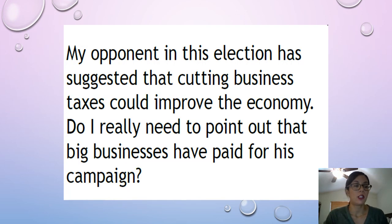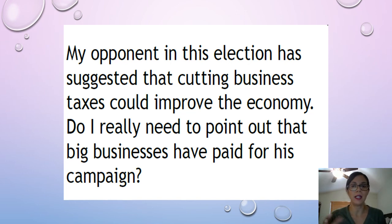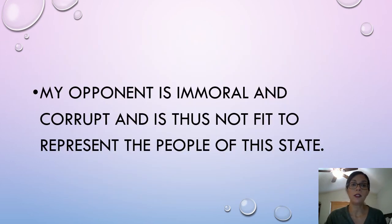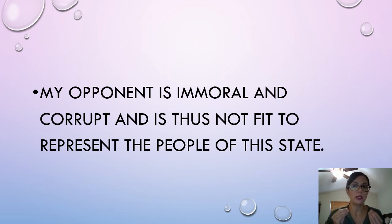For instance: 'My opponent has suggested that cutting business taxes could improve the economy. Do I really need to point out that big businesses have paid for his campaign?' There's no rationale given for why cutting business taxes is wrong — instead, it tries to make the person seem like a hypocrite by diverting attention. This is a straw man fallacy. By contrast: 'My opponent is immoral and corrupt and is not fit to represent the people of the state' — this attacks the person's moral character, making it ad hominem. Both don't deal with the debate, but one distracts while the other directly attacks.